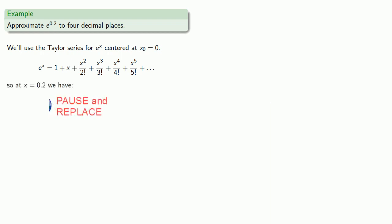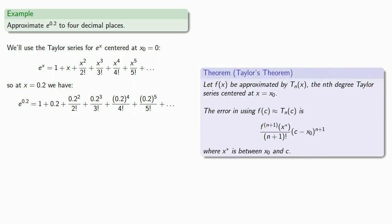For example, suppose we want to approximate e to power zero point two to four decimal places. We'll start with our Taylor series for e to the x centered at x zero equals zero and evaluate this at zero point two. It's not an alternating series, so our remainder theorem for alternating series doesn't apply. Fortunately, we can use the Taylor remainder theorem.